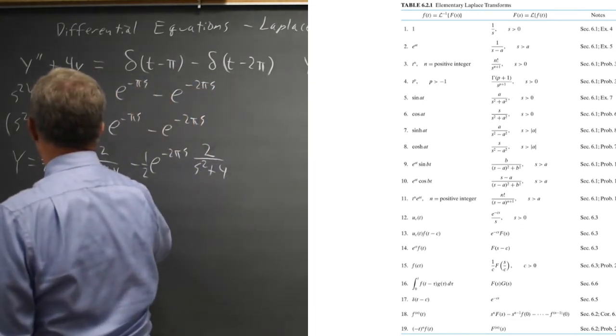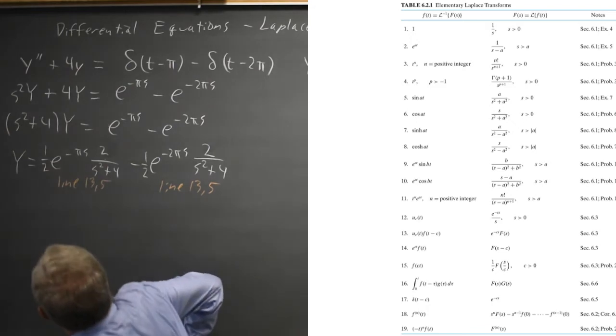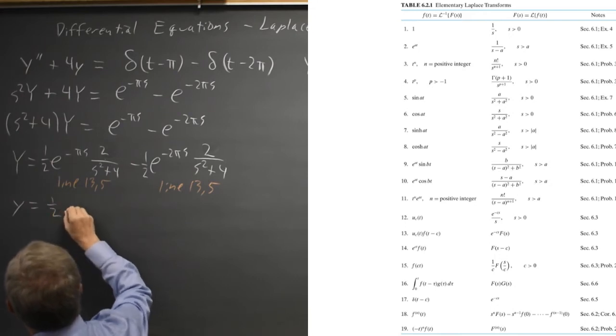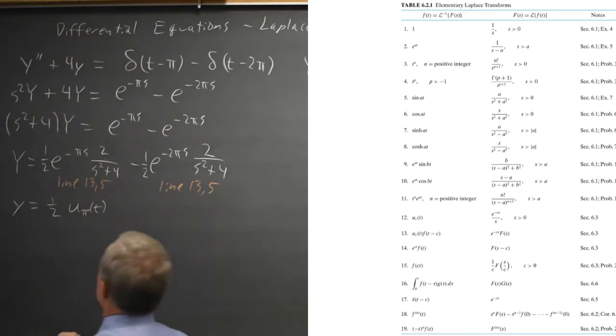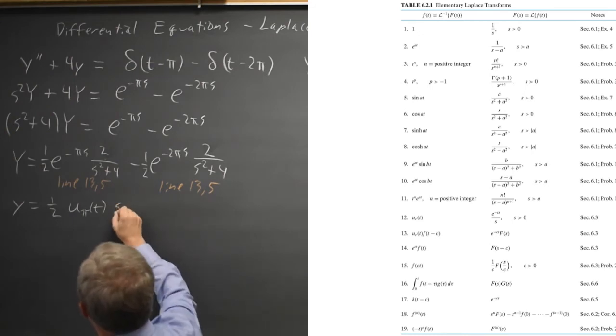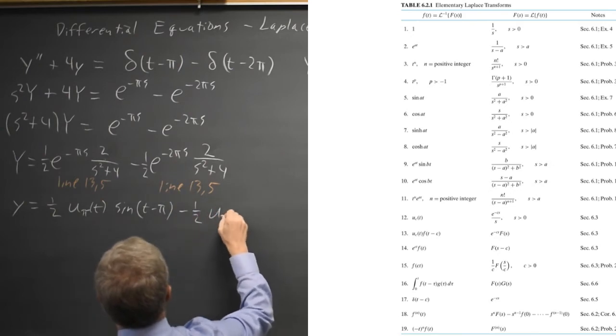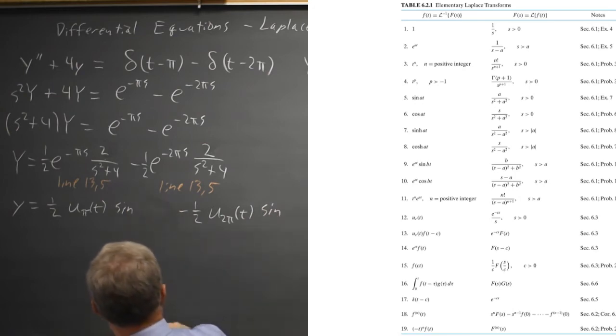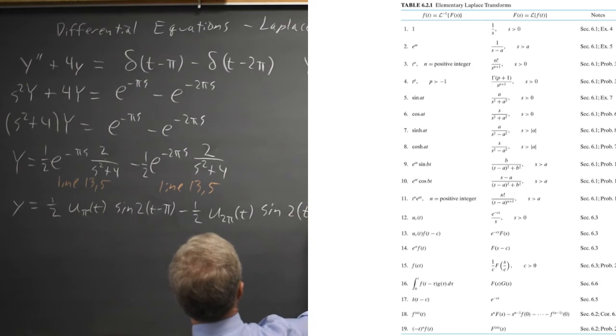The inverse transform, my actual solution y, is 1 half u pi of t, sometimes written as u of t minus pi, and then sin of t minus c becomes sin of t minus pi. And then minus 1 half for this one, I get u 2 pi of t, sin - I left out the 2 - sin of 2 times t minus pi, and sin of 2 times t minus 2 pi.